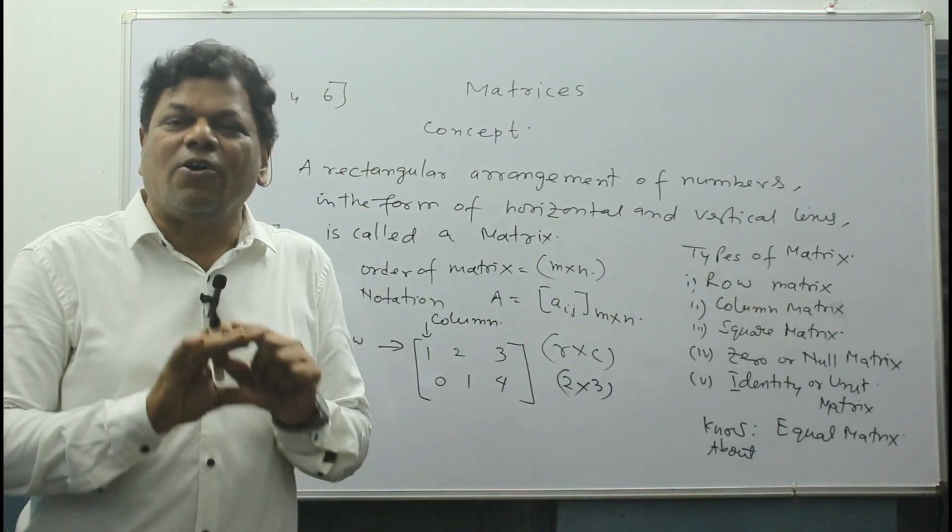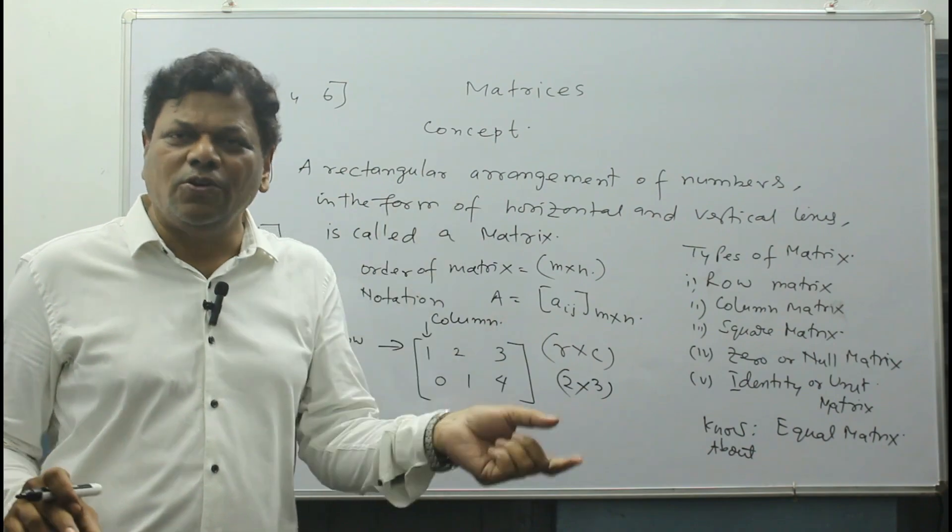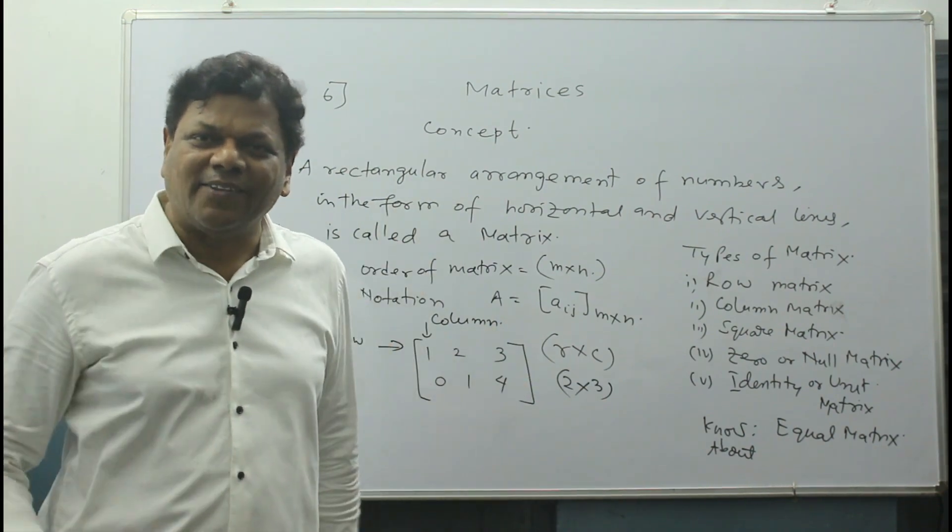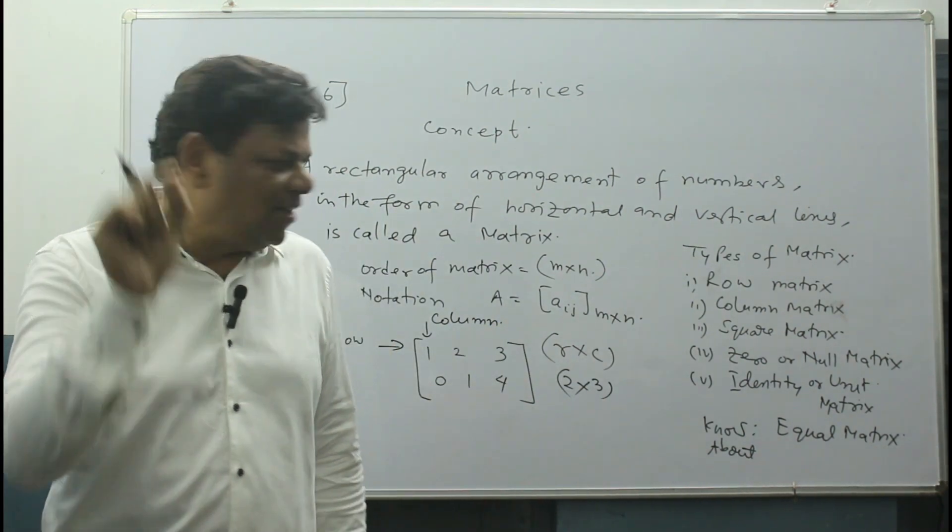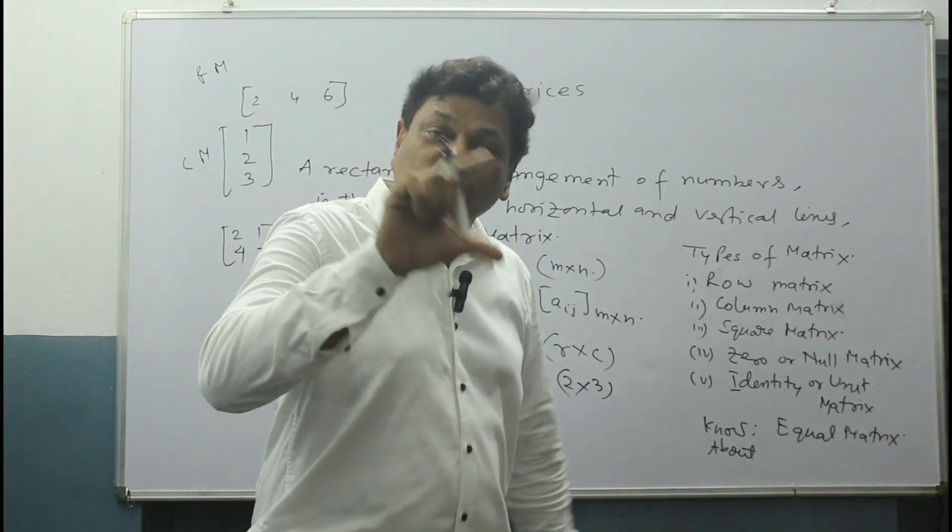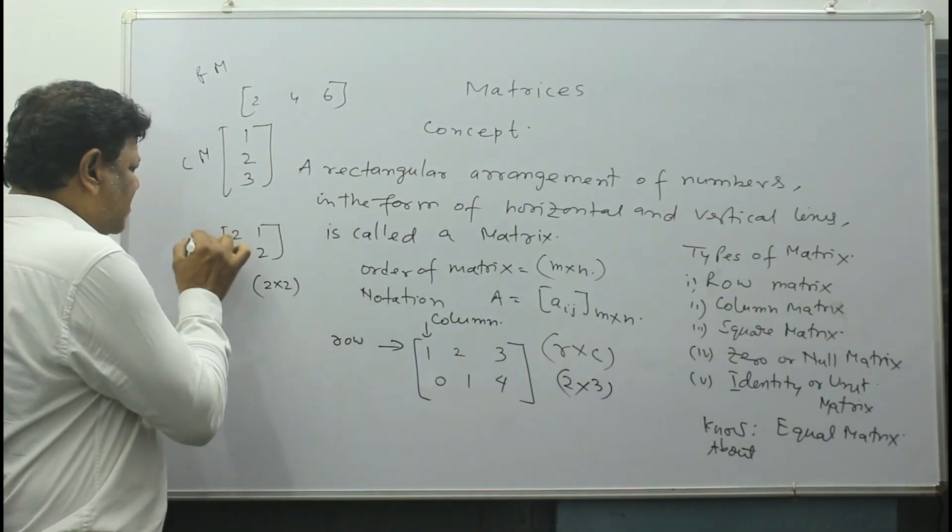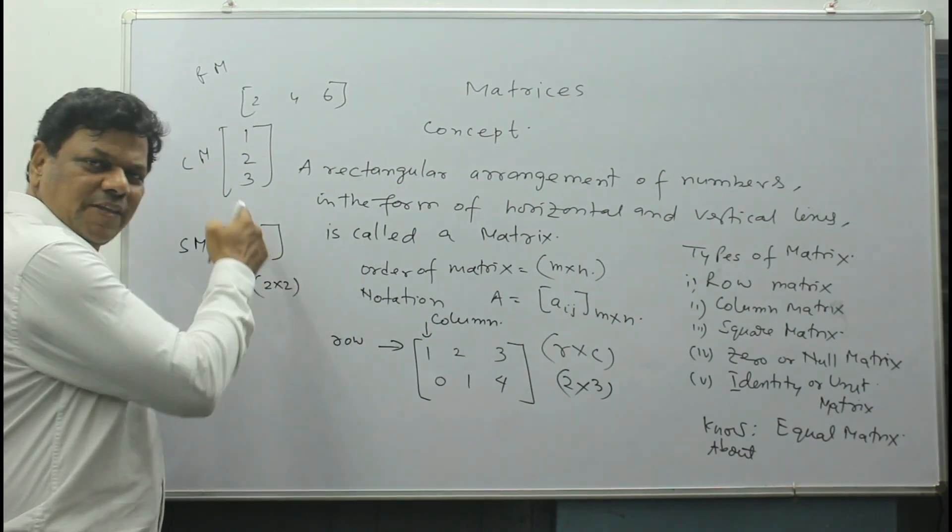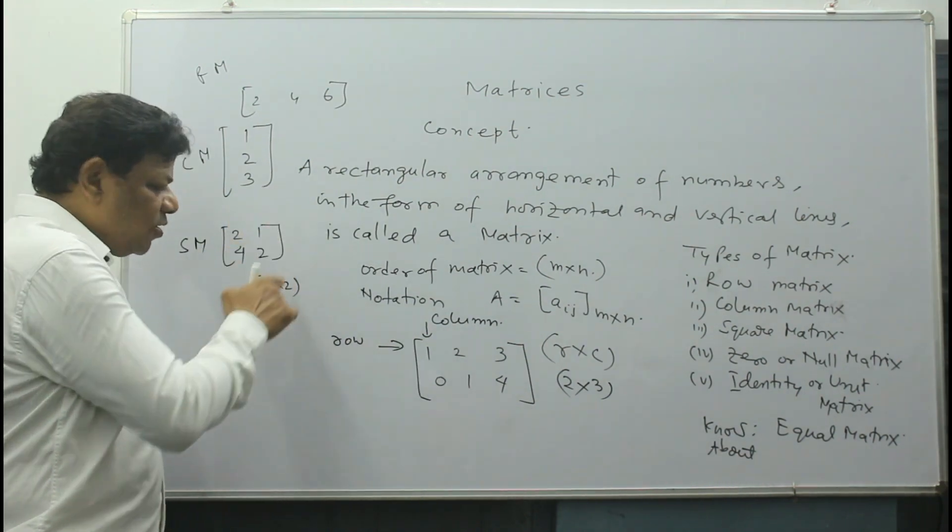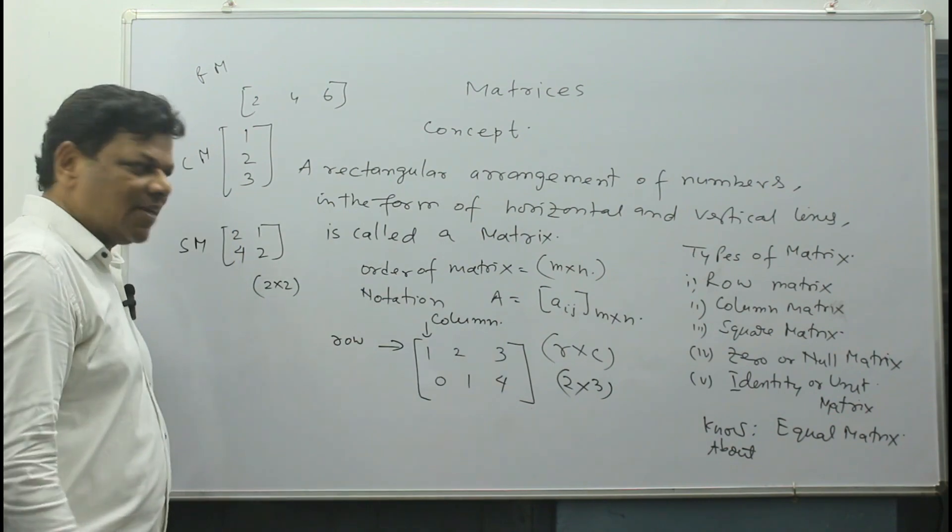What is square matrix? When row and column are equal—2 rows, 2 columns; 3 rows, 3 columns. That is called square. You already know square—length and breadth equal. So square matrix means row and column should be equal. See, this is a square matrix. Why? Number of rows: 2. Number of columns: 2. So this is called square matrix.